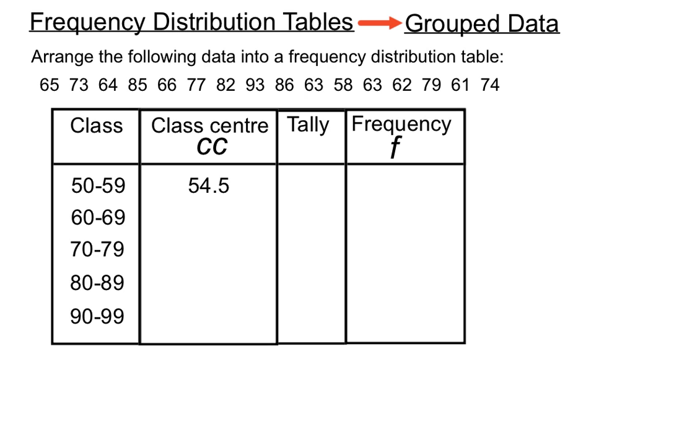We won't use it much in this one, but for each of those groups, it's going to work the same way and we're going to have class centers of 64.5, 74.5, etc. We get these by adding the two boundary numbers together and dividing by 2. We basically take the average of those two numbers and we get a class center to use later on for graphing and that sort of thing.